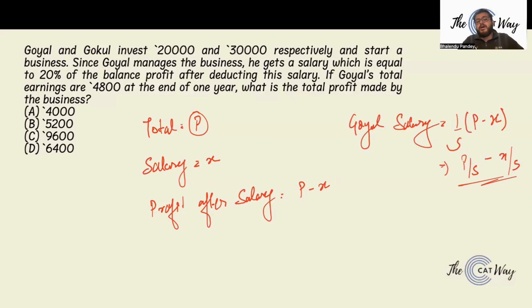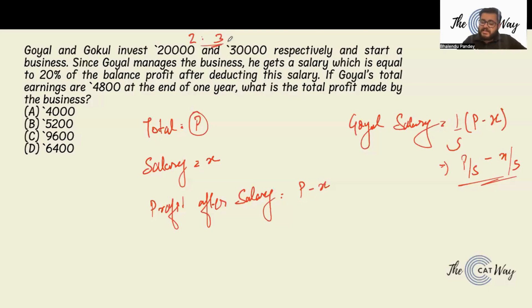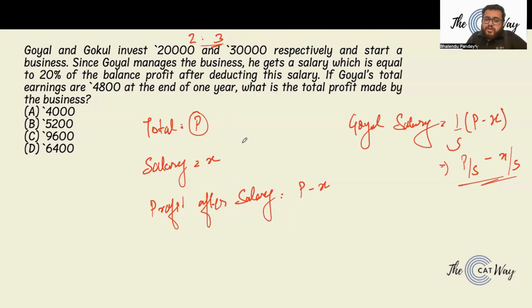Goyal earned 4,800 at end of one year. After his salary is removed, the remaining profit is shared in the ratio of investment — 20,000 to 30,000, which is 2 is to 3. So Goyal also gets 40% of the balance profit. What Goyal receives is his salary (P by 5 minus X by 5) plus 2 by 5 of (P minus X), his share of the remaining profit.